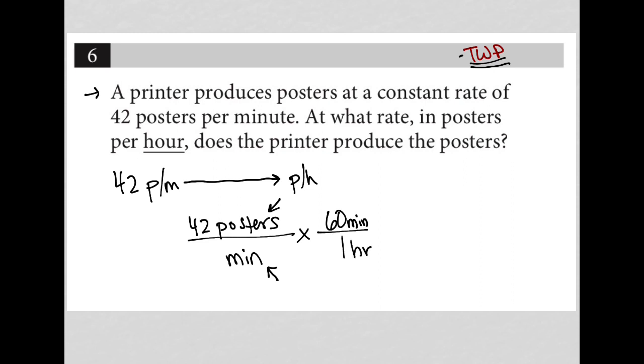I write the 60 minutes up top because I want the unit that I want to cross out to be diagonal and the unit that I want to introduce to not cross out. Now it's on the bottom where I want it to be in the per hour location.